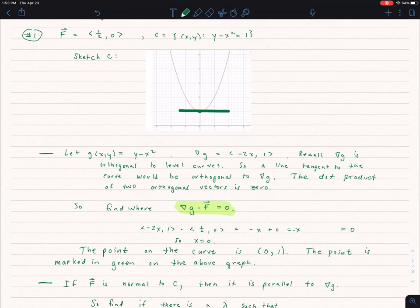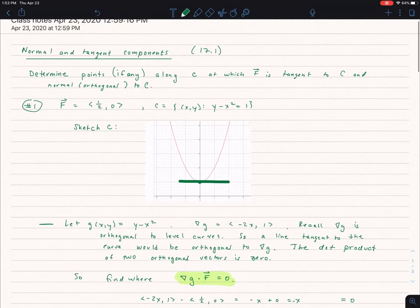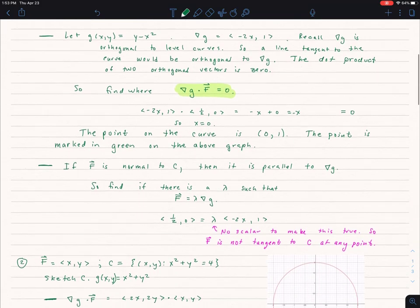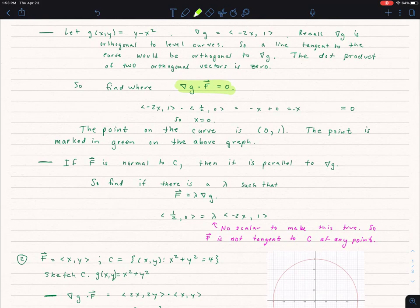If I want to find points where F is orthogonal to the curve C, or normal, you can think of it either way, that means it's going to be parallel with that gradient. So how do I tell if something's parallel? It's just a scalar times that gradient. So in this case, if I try to see is there any constant that I can multiply by my gradient to get me F, and the answer is no. So there is no F tangent to C at any point on that curve.